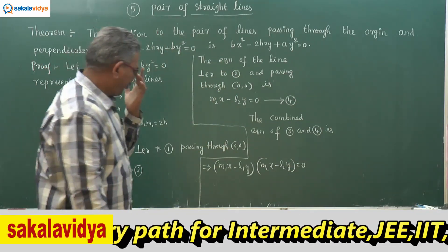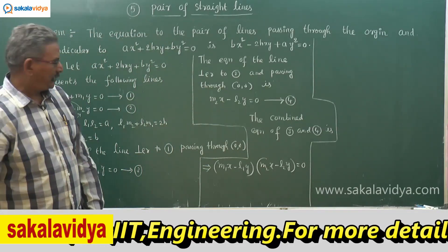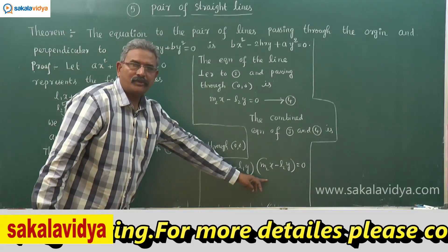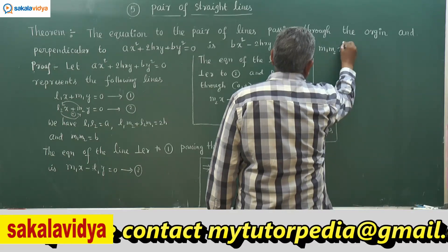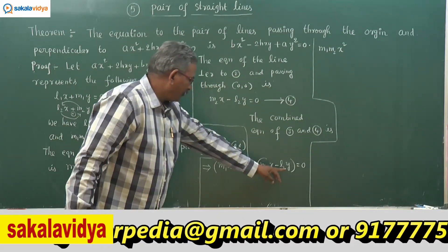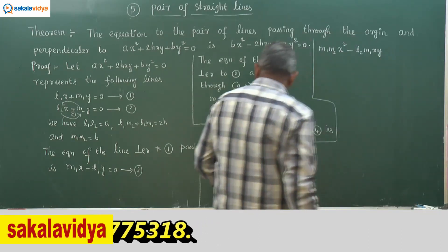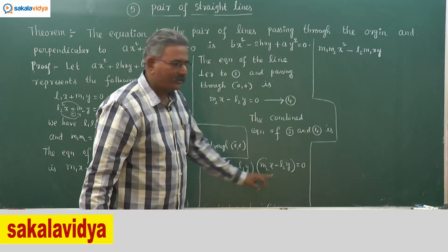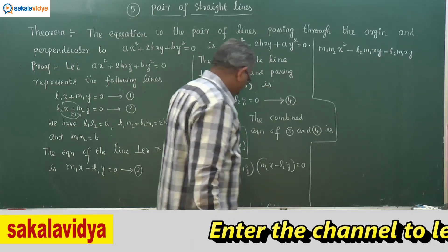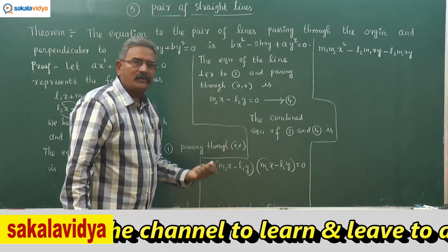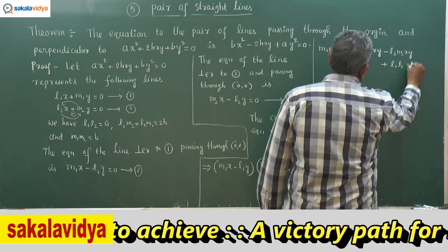Expanding: m₁x · m₂x gives m₁m₂x²; m₁x · (-l₂y) gives -l₂m₁xy; (-l₁y) · m₂x gives -l₁m₂xy; and (-l₁y)(-l₂y) gives +l₁l₂y². Combining the xy terms: m₁m₂x² - (l₁m₂ + l₂m₁)xy + l₁l₂y² = 0.